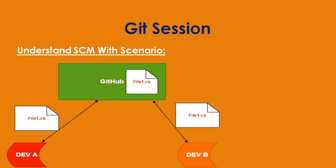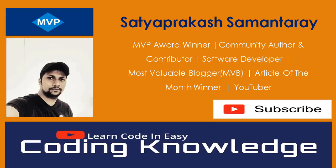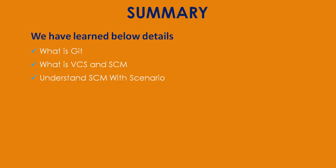In this session, we learned the difference between SCM and VCS, and what source code management is with a real-time example. This is the Coding Knowledge YouTube channel where we cover .NET, MVC Core, SQL Server, Postman, and Git. Today we learned what Git is, VCS stands for version controlling system, SCM stands for source code management. That's it — thank you for listening and have a great day.